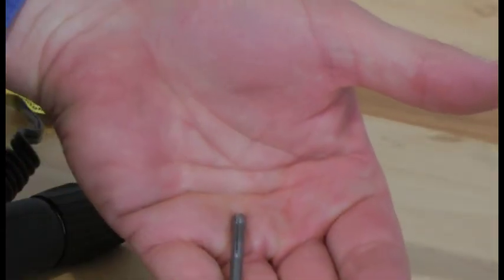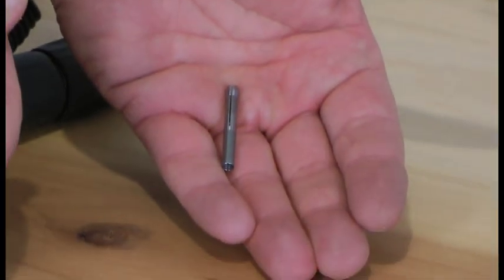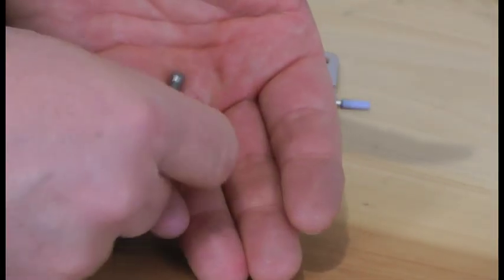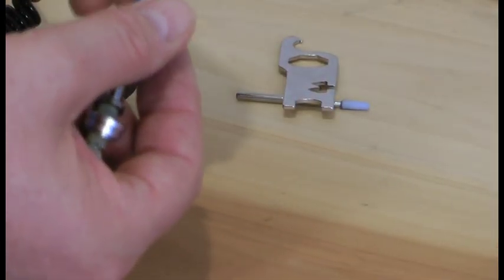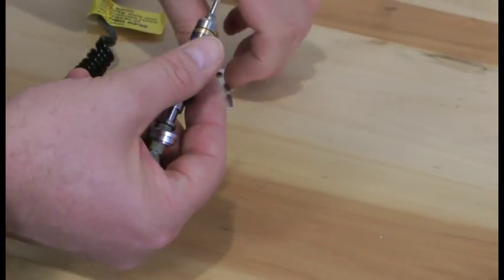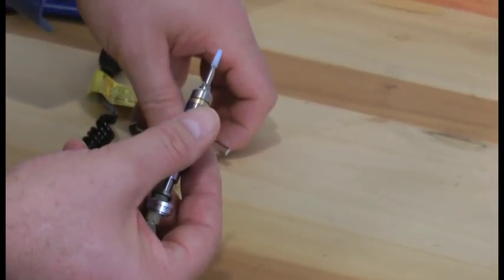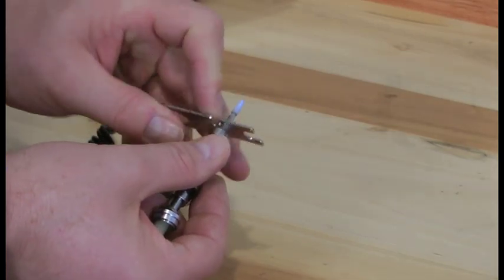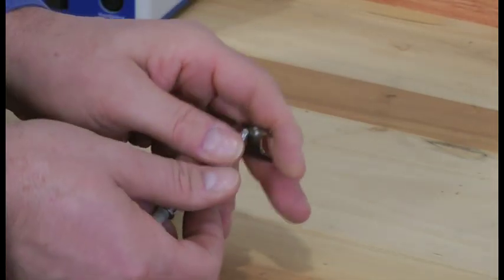And this is your collet. Now to put your collet back in and change another collet, you just simply put it in. Don't forget to put the burr shank in there. Tighten that up.